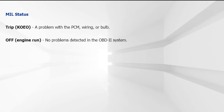MIL Operation Status: The MIL will remain on steady under KOEO, or Key On, Engine Off, conditions. However, there are some models where the MIL will come on briefly and then go out when the key is turned off, engine off. This is considered normal and is not an indication of a problematic MIL circuit.